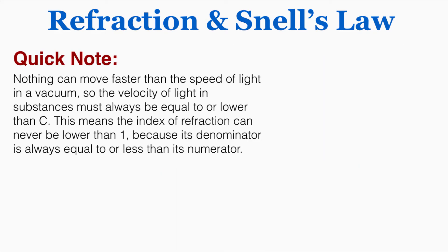Just a note, nothing can move faster than the speed of light in a vacuum, so the velocity of light in substances must always be equal to or lower than c. This means that the index of refraction can never be lower than 1, because its denominator is always equal to or less than its numerator. So just to prove that, because the velocity of light in a substance is always less than or equal to the velocity of light in a vacuum, I can rearrange the equation like this, and show that the index of refraction must always be greater than or equal to 1. You can't have a smaller than 1 index of refraction.